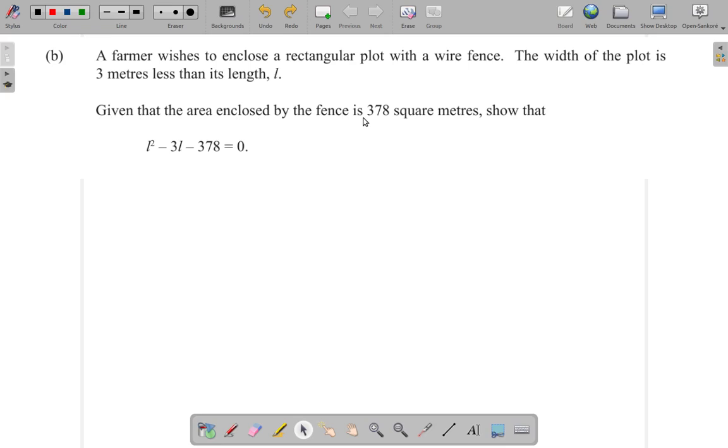Given that the area enclosed by the fence is 378 square meters, show that L squared minus 3L minus 378 is equal to zero.